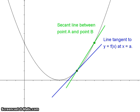We'll see what happens as the second point slides down. As those two points get closer, the secant line and the tangent line start to look more and more like each other.